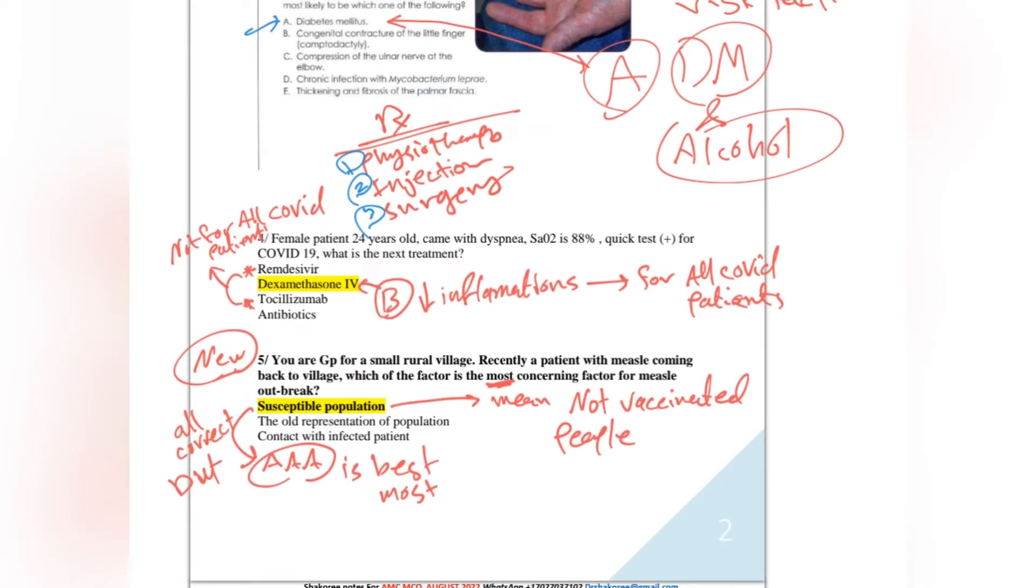Another question is a female who has COVID-19 and her saturation is low, she is on oxygen. What to give for COVID patients? Very common question nowadays in AMC MCQ. Remdesivir, dexamethasone, tocilizumab, and antibiotic. Look, the main drug that can be given for all patients who have COVID is dexamethasone.